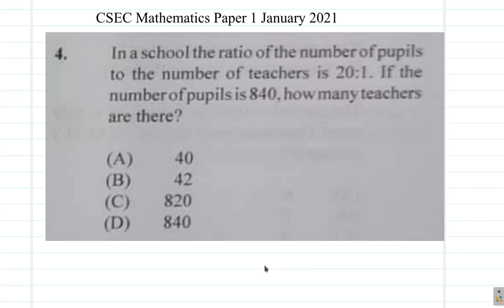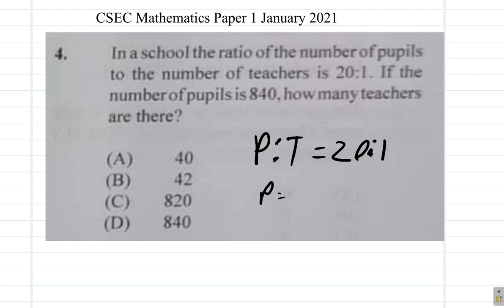Question 4. In a school, the ratio of the number of pupils to the number of teachers is 20 to 1. So here, pupils to teachers is equal to 20 to 1. Now, if the number of pupils is 840, how many teachers are there?